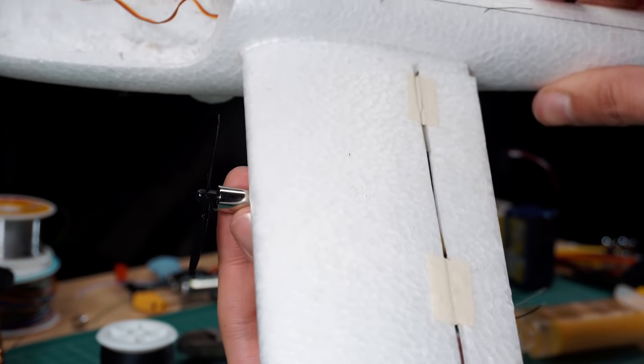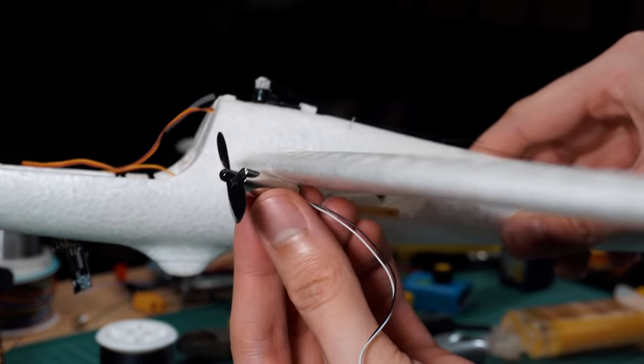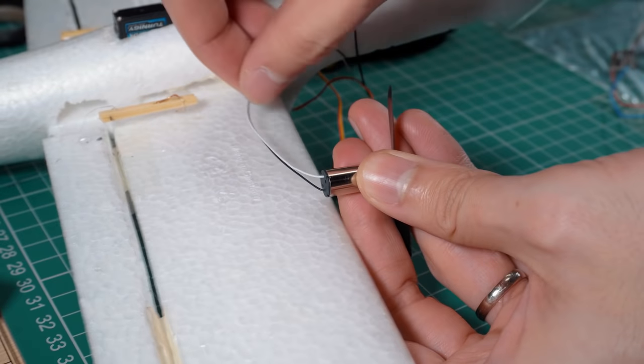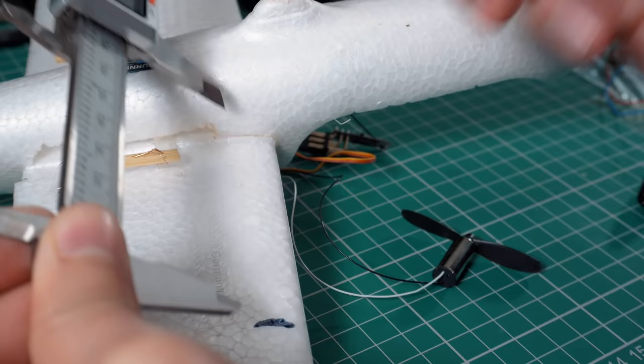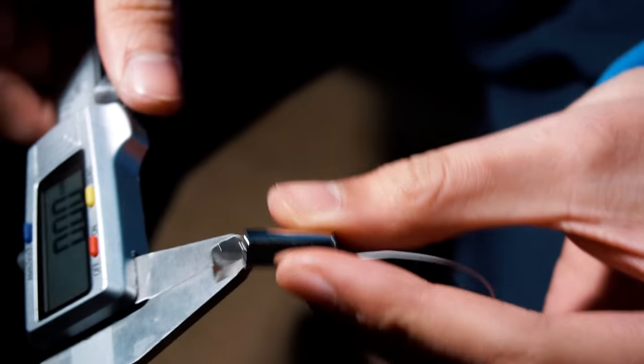Now I'm going to see where I'm going to put these motors. Naturally the motors will be placed as close as possible to the fuselage. I was thinking to glue them directly to the wing but I thought of a better and elegant solution.